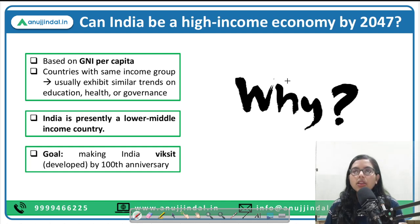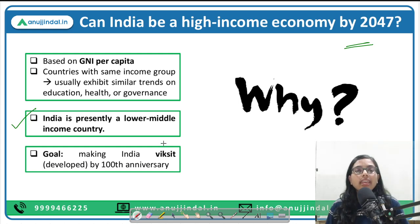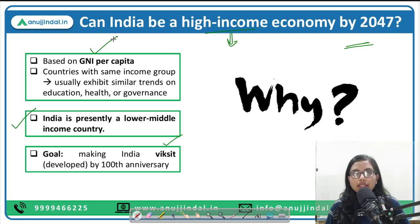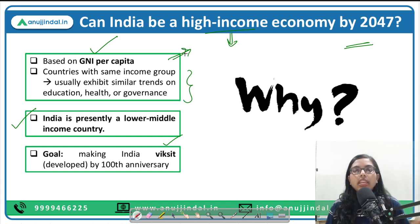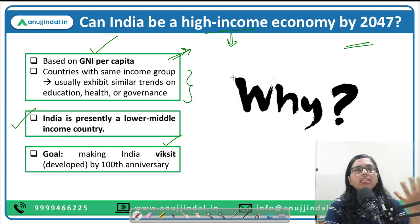Can India really become a high income economy by 2047? India is currently in the lower middle income category, and our Prime Minister has stated the goal of making India a Viksit Bharat — a developed nation — by its 100th anniversary. The high income categorization based on GNI per capita also reflects similarity in education, human development, health, and governance trends among high-income countries. To understand why the government is thinking about this, we need to go into the past.